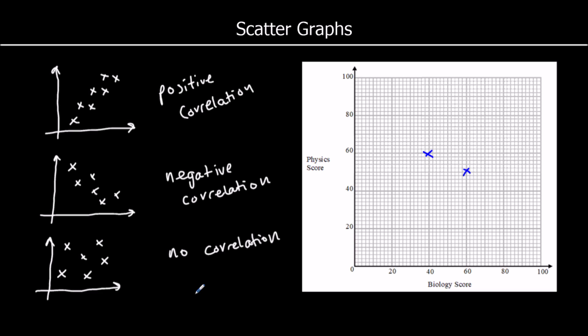It's important to know that just because two things are correlated — say there was a positive correlation between the biology scores and the physics scores — that doesn't mean there's a causation. So it doesn't mean that one of them is causing the other one. Doing actual work in biology isn't going to cause your physics score to go up. So just because there's a correlation, it doesn't mean that one is the cause of the other.